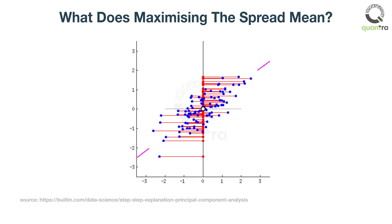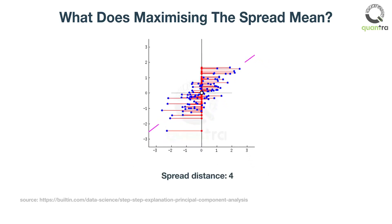You will first project the points on the black line, which become the red dots on the black line. And then measure the distance between the farthest red dots on the line. Loosely speaking, this is called the spread. The spread when the line is vertical is 4, and when it is horizontal it is 5.25.